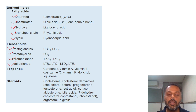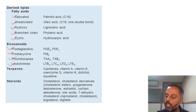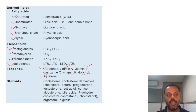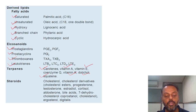The third derived lipid is terpenes. Terpenes contain isoprenoid units, which are high-carbon-containing compounds. Examples of terpenes are carotenes, vitamin A, vitamin E, vitamin K, dolichol, and squalene. Steroids are lipids which contain cyclopentanoperhydrophenanthrene ring structure.